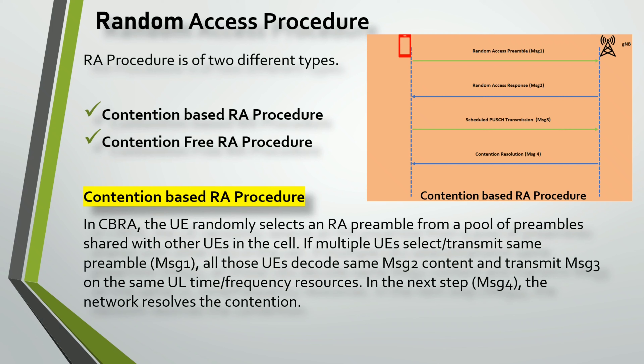In the figure, I have illustrated how Contention Based RA procedure works. In CBRA, the UE randomly selects an RA preamble from the preamble pool, which is shared by other UEs in the cell. If multiple UEs select or transmit the same preamble — that is Message 1 — then all those UEs decode the same Message 2.